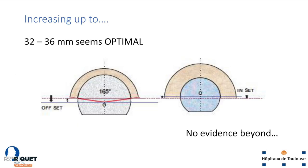There is much evidence to show that we have to increase the head size, but up to which size? This is highly debated. The trend across Anglo-Saxon countries is to go to 38, 40, and more. We've been able to increase this due to progress in the industry and the metal and ceramic we use. But there's a paradoxical effect: if you increase beyond 36, you increase the offset of the ball, which paradoxically reduces the jump distance. So we're not sure that beyond a certain point we're still beneficial for the patient.